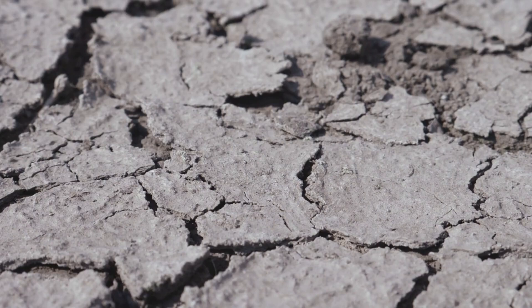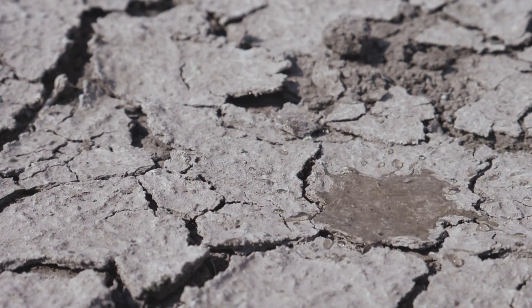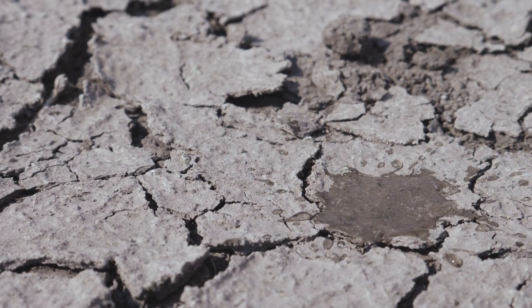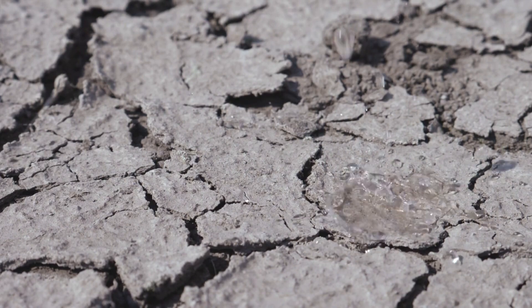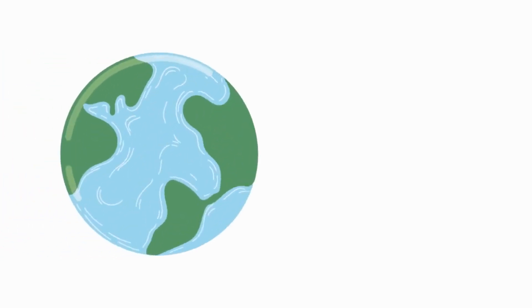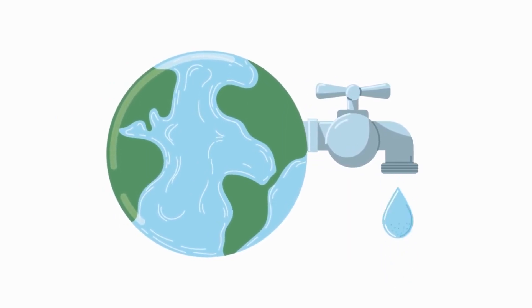Water cycling. Once water was established on Earth's surface, natural processes such as the water cycle — evaporation, condensation, precipitation, and plate tectonics — helped redistribute and maintain the water over time. This continuous cycling sustains Earth's vast water supply.